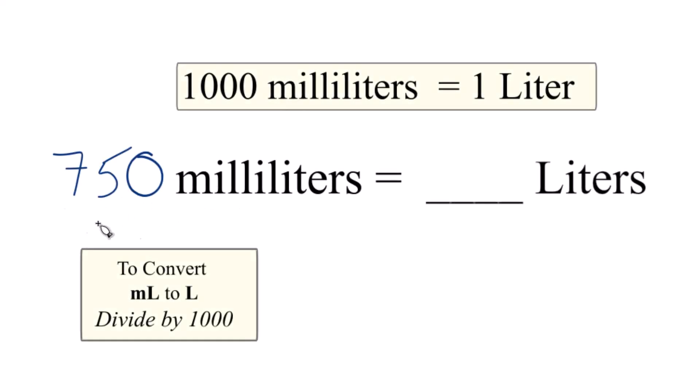Someone asked how do you convert 750 milliliters to liters. So the first thing you need to know is that in one liter we have a thousand milliliters. 750, that's less than a thousand, so we should get a number that's less than one.